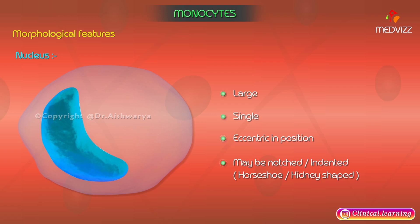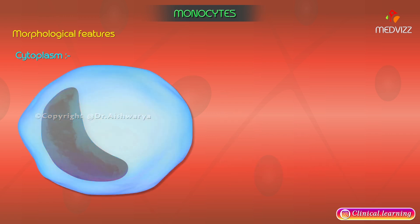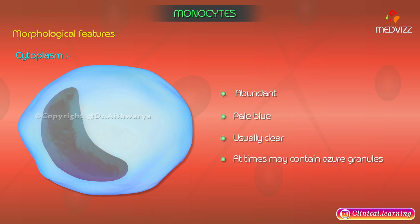The nucleus may be horseshoe or kidney shaped. The cytoplasm is abundant, pale blue, and usually clear — meaning no granules. Sometimes it may contain fine purple dust-like granules called azure granules, which may be few or numerous.